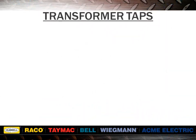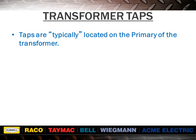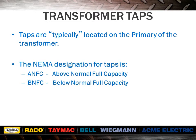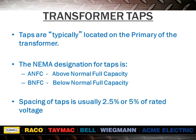Next, we'll learn about taps. Taps are a feature found on some transformers which allow you to correct for constantly high or low voltage conditions, while still delivering full rated output voltages to the load. The term normal refers to the nominal voltage. Taps must be physically changed to correct for other than nominal voltage. Full capacity implies that regardless of which tap voltage is selected, the transformer rating still remains at full nameplate kVA. The spacing of taps is usually 2.5% or 5% of rated voltage.